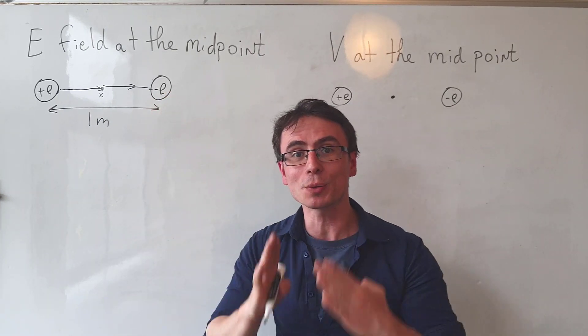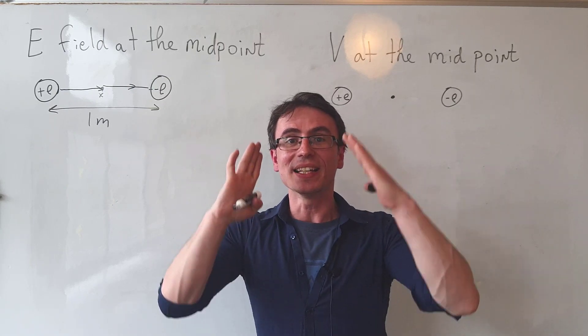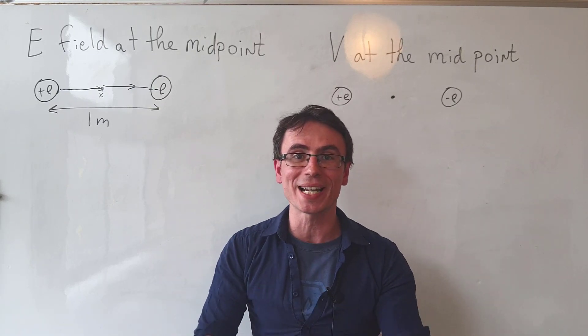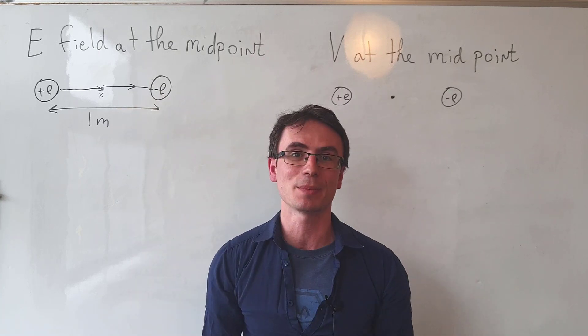So even though this is negative, what we need to do is add the magnitudes of the two electric fields because they are going in the same direction.